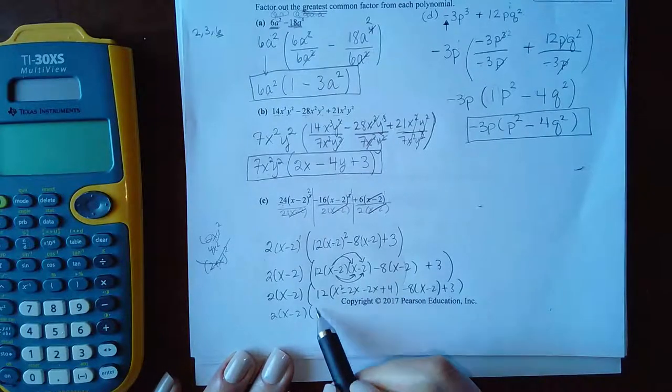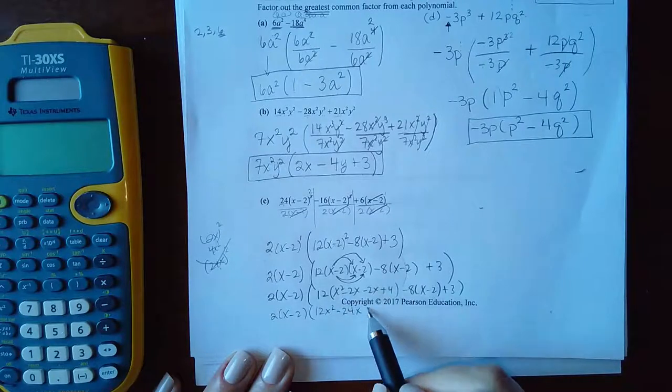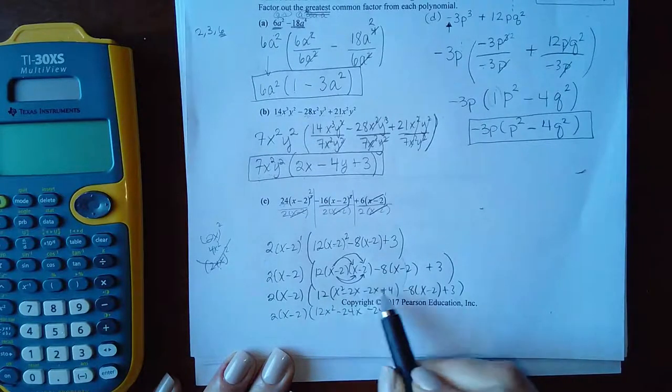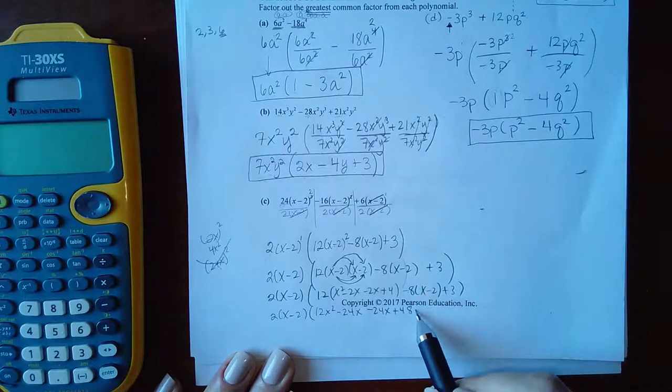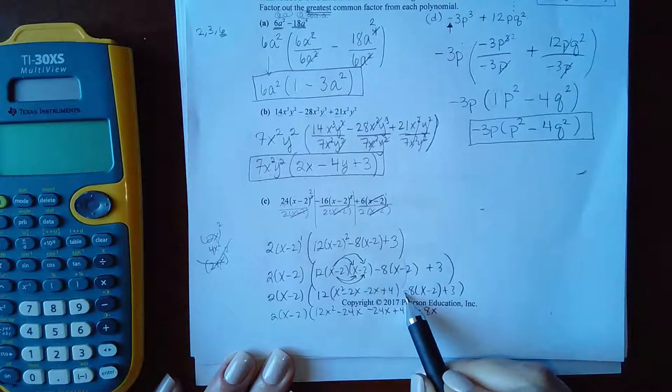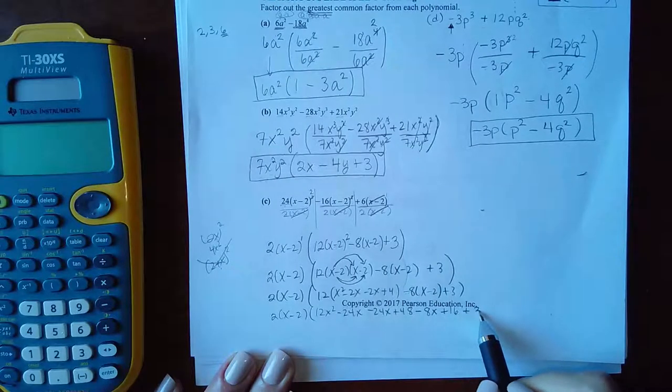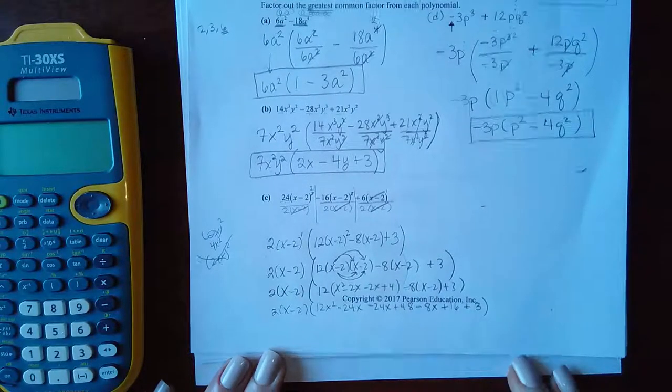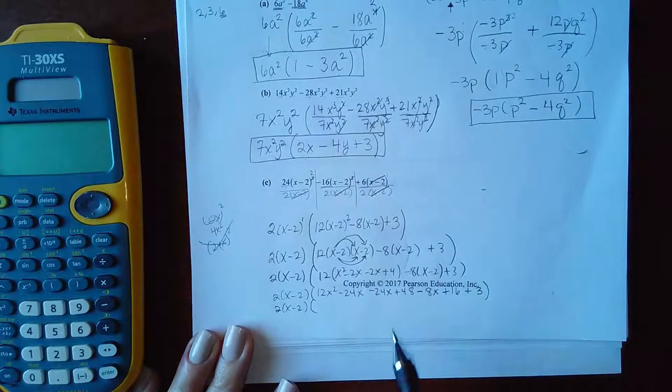Now that's 12X² and that's negative 24X. That's negative 24X and that's positive 48. Moving on here, that's going to give me negative 8X, negative 8 times negative 2 is positive 16 and my plus 3 that was hanging out.